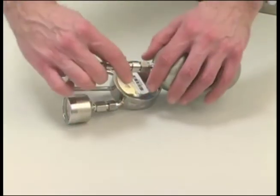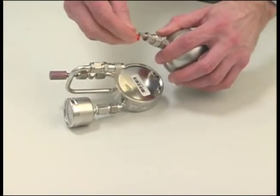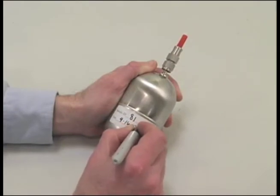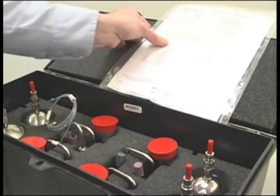When your sampling period is over, remove the regulator by pulling back the collar and slipping it off the can's inlet stem. Replace the protective cap, label the sample, and fill out the chain of custody. Repack and return everything to Galson Labs.